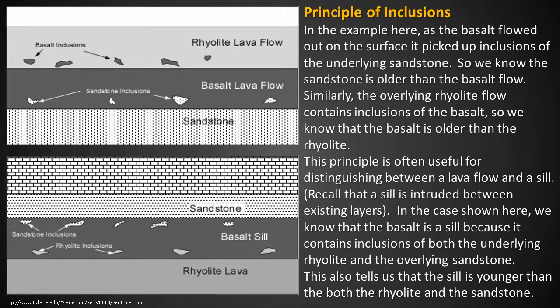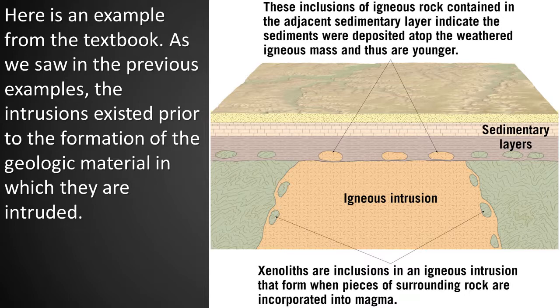Recall that a sill is intruded between existing layers, much like a dike, although a sill is horizontal and a dike is vertical. In this case, we know the basalt is a sill because it contains inclusions of both the underlying rhyolite and the overlying sandstone. This tells us the sill is younger than both the rhyolite and the sandstone. Here is an example from the textbook: the intrusions existed prior to the formation of the geologic material in which they are intruded.